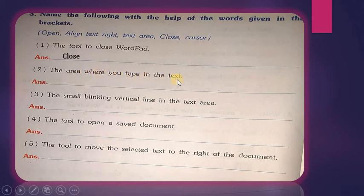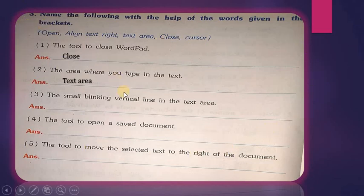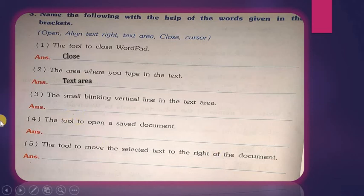The second question: the area where you type text in the program. Which area do we use for typing? It is the Text Area. The Text Area is the blank white page you see when you open Notepad or WordPad. This white page is called the Text Area, and we write our text there.